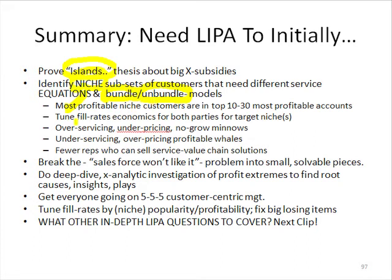Once we have two, three, four, or five representative customers per niche, we can go find another 30 or 40 further down the list, put them all in one pot, do a customer or item profitability popularity report, and then tune our fill rates for a target niche. We can also find the boundaries for service models and so forth.